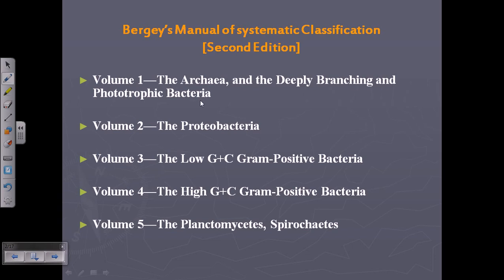Each volume has general characteristic features, and those bacteria which fulfill that general characteristic feature are placed into that volume. The general view is that Volume 1 consists of the archaea as well as the deeply branching and phototrophic bacteria.